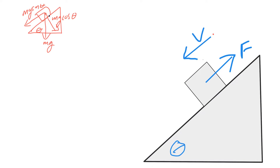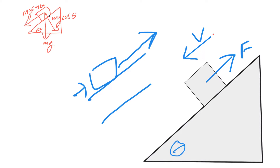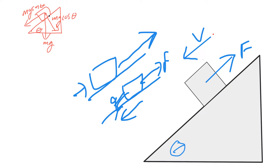Now let's look at situation two. Everything is almost exactly the same, except this time instead of the object moving up the ramp, it's sliding down. Imagine in the last problem you were pushing a refrigerator up the ramp, but now the refrigerator is sliding down and you're pushing back against it from behind, trying to keep it from crushing you. So the applied force is still going up the ramp, but the velocity is now directed down the ramp.